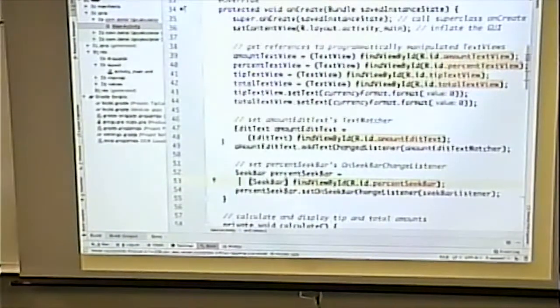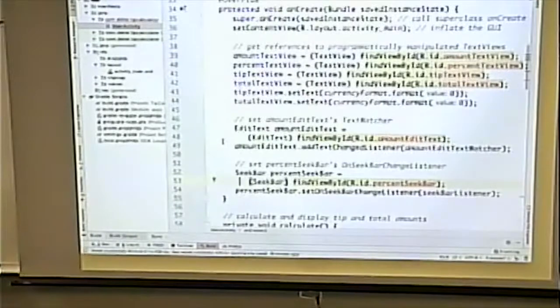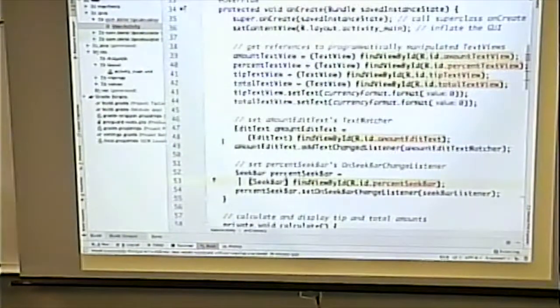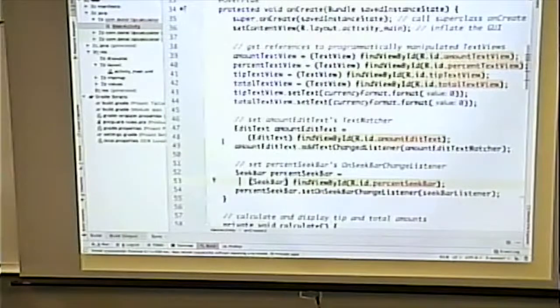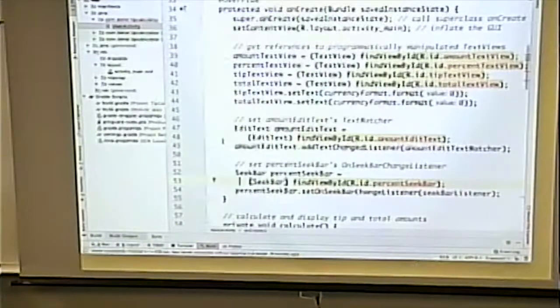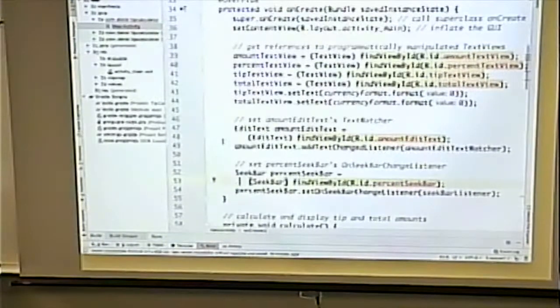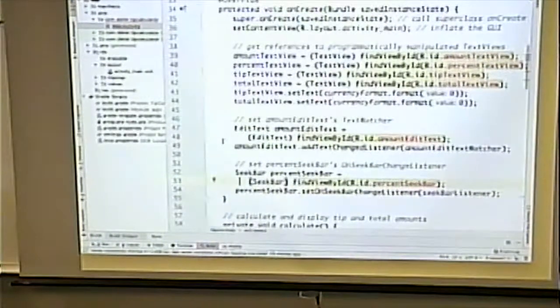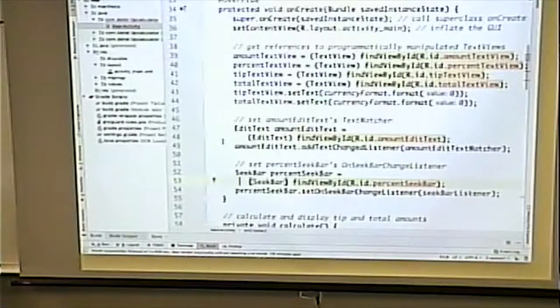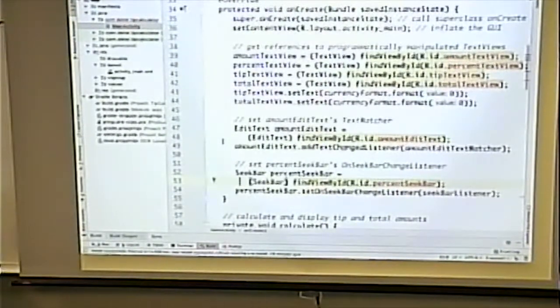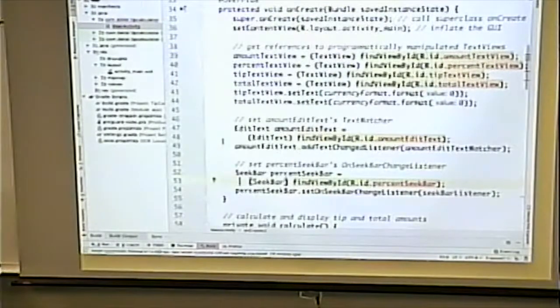And then we set the seek bar listener and the amount edit text watcher. Notice that these are different kinds of listeners. Right? With the button we add on click listeners. Why? Well, that's what you do with the button. You click it. So there's an on click listener on that button so that when you click the button something happened. Here there's different kinds of listeners. We're listening for different events.